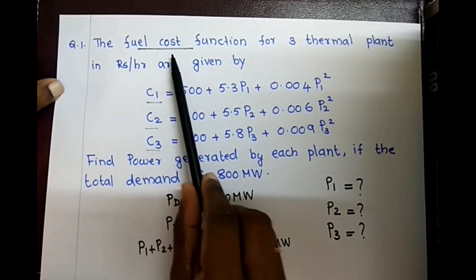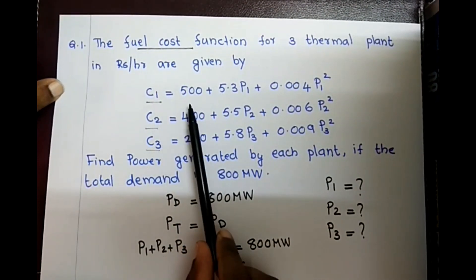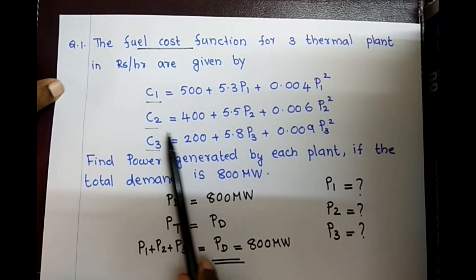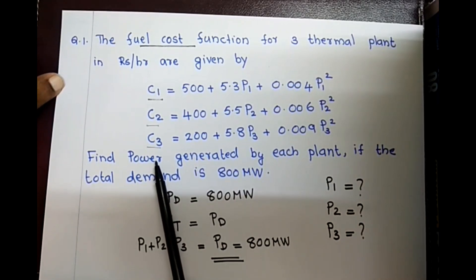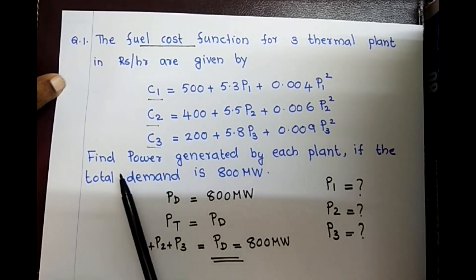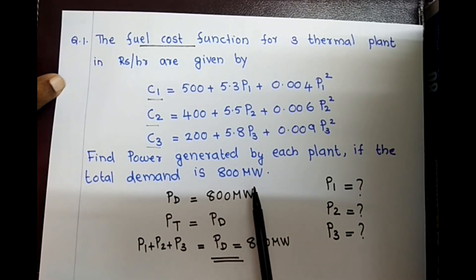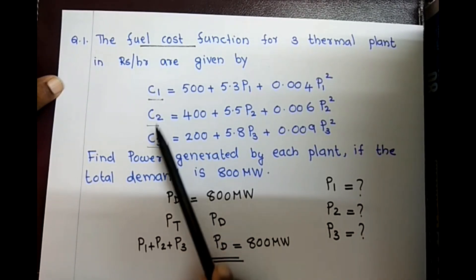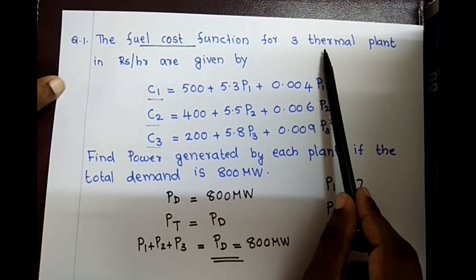The fuel cost functions for three thermal plants in rupees per hour are given by: C1 = 500 + 5.3·P1 + 0.004·P1², C2 = 400 + 5.5·P2 + 0.006·P2², and C3 = 200 + 5.8·P3 + 0.009·P3². Find the power generated by each plant if the total demand is 800 megawatts.